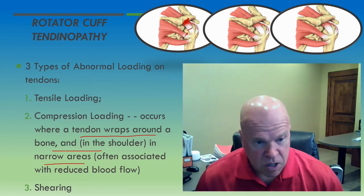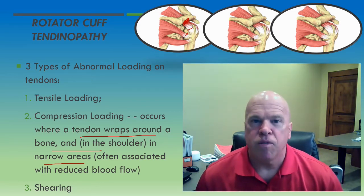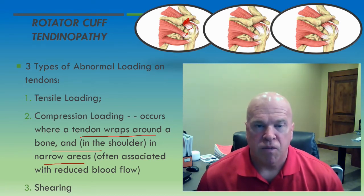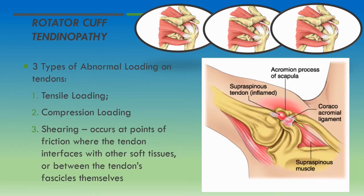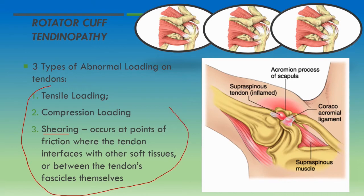In addition to tensile and compressive loading, we also see abnormal loading in the form of shearing forces. Shearing forces occur at points of friction where the tendon interfaces with other soft tissues, or even between the tendon fascicles themselves. All three types of abnormal loading — tensile loading, compression loading, and shearing loading — upset the internal homeostasis of the tendon, which results in a decay of the health of the tendon.